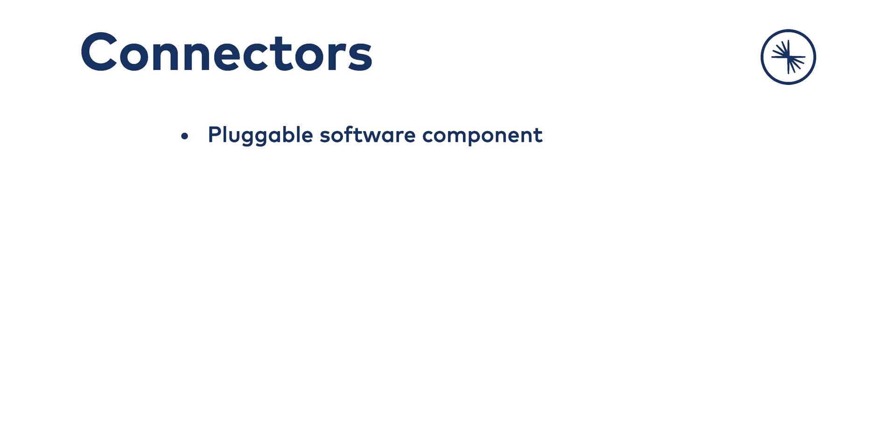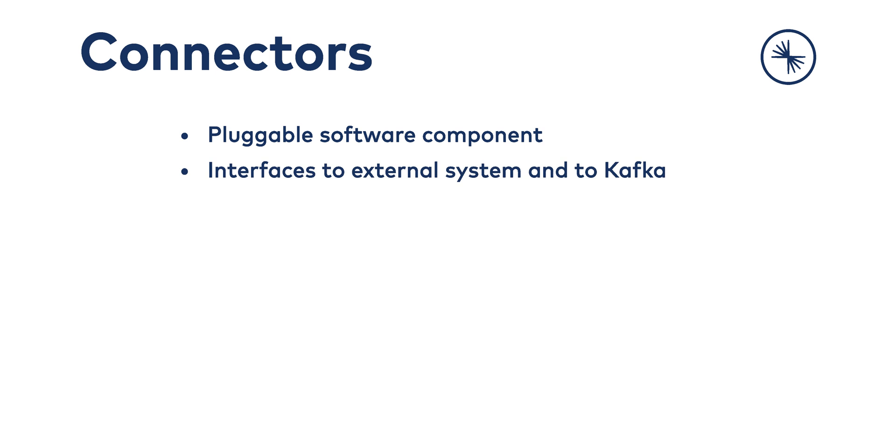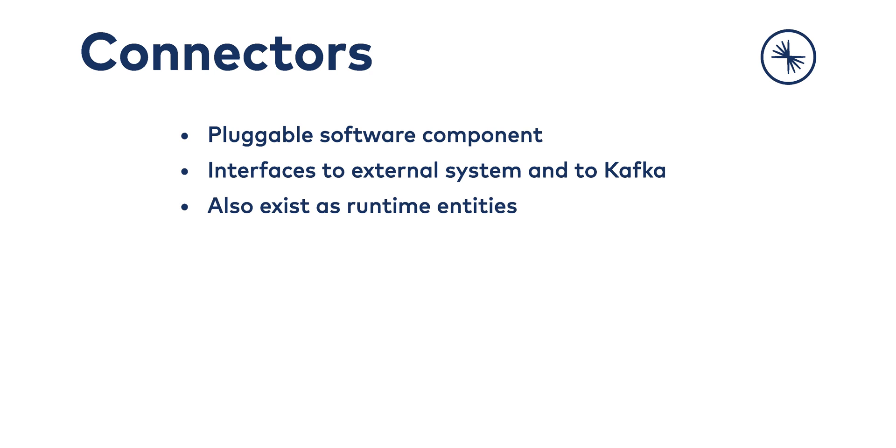A Connect worker — one of the nodes in the Connect cluster — runs one or more connectors. The word 'connector' has two senses. First, a connector is a pluggable component responsible for interfacing with an external system; in its simplest definition, it's a jar file with all of the JVM Connect code in it. Second, connector has a runtime sense: once you've posted that JSON snippet to the REST endpoint on the Connect cluster, that deployed jar becomes instantiated as a runtime connector.